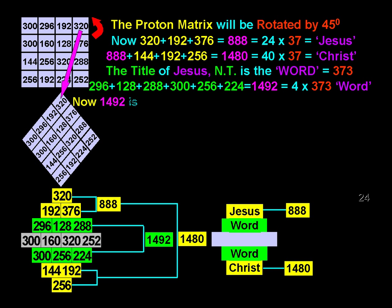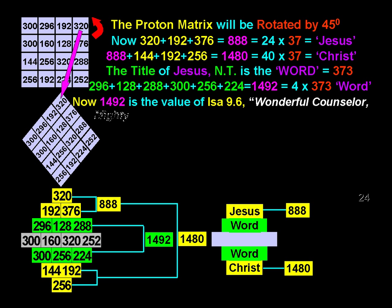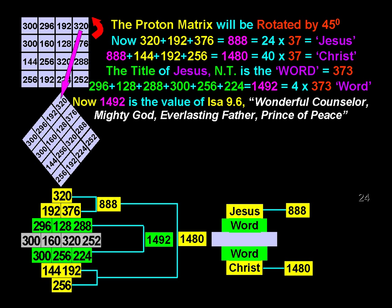1492 is also the value of the prophecy of Isaiah chapter 9 verse 6: Wonderful Counselor, Mighty God, Everlasting Father, Prince of Peace.